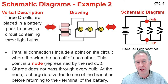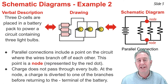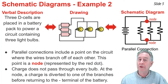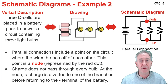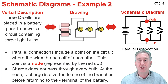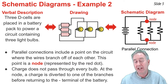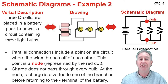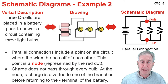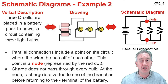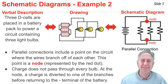What makes a parallel connection so different from a series connection is that any charge traversing a loop around the circuit will not go through every light bulb. At the node, charge is diverted to one of the three pathways, then goes through the light bulb, comes back to the second node, and returns to the negative terminal of the battery. So there is a collection of three possible pathways a charge could make around this circuit.